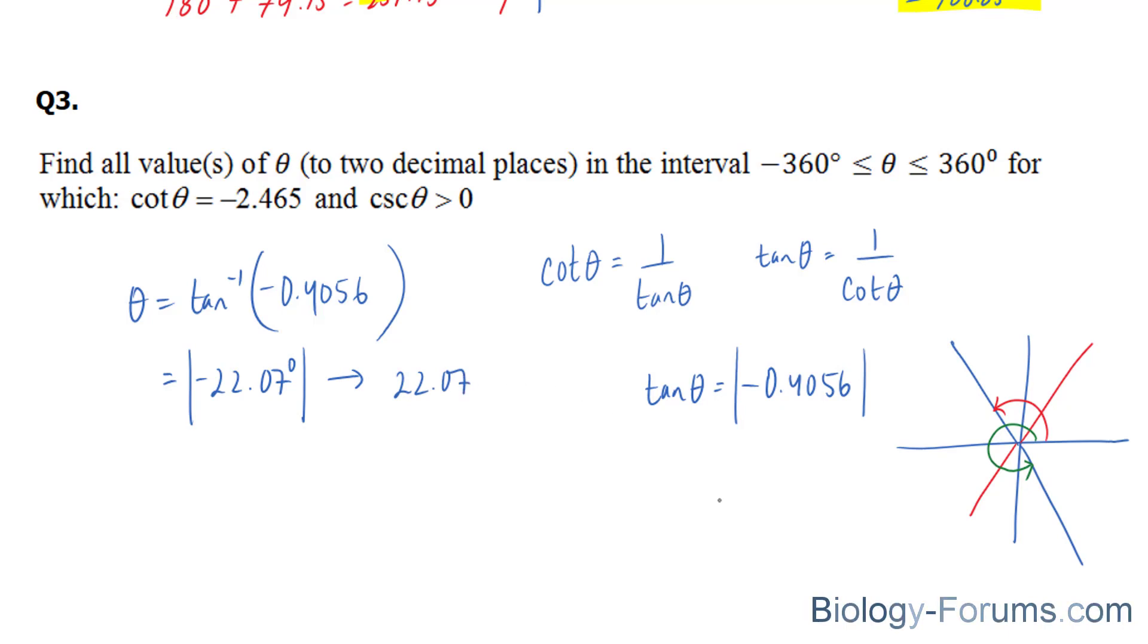And the reason why we do that, the reason why we take the absolute as opposed to that, is because these reference angles, these acute reference angles for quadrants 2, 3, and 4 are already preset.